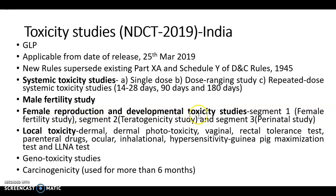Female reproduction and developmental toxicity studies are divided into Segment 1, Segment 2, and Segment 3. These are required if your molecule is intended for use in women; if it is for males only, these studies are not required. Segment 1 is female fertility studies conducted in rodent species, with drug administration for 28 days in males and 14 days in females before mating. At least 15 males and 15 females per group are required, and parameters including body weight, behavior, and progression of gestation are assessed.